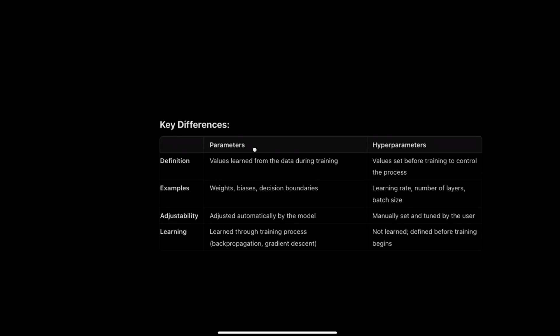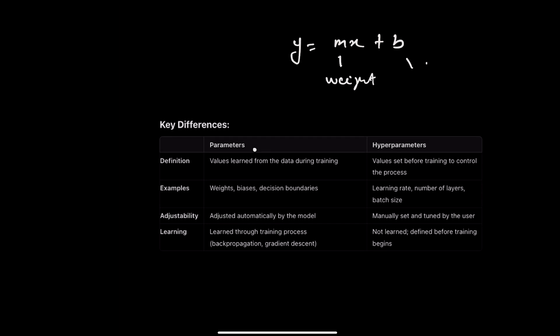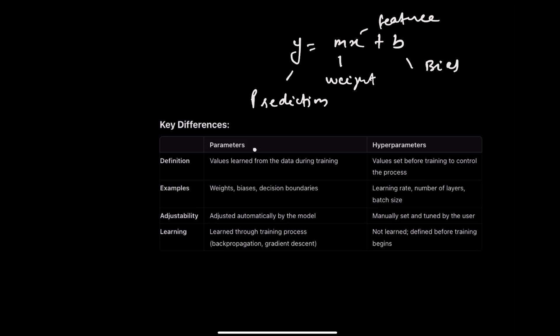Let's understand the difference between parameters and hyperparameters. Examples of parameters are weights and biases. In the equation y = mx + b, m is the weight and b is the bias, y is the prediction, and x is the feature value or input. Hyperparameters are values set before training to control the process — examples include learning rate, number of layers, and batch size.